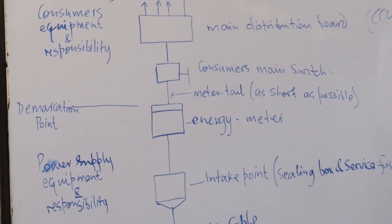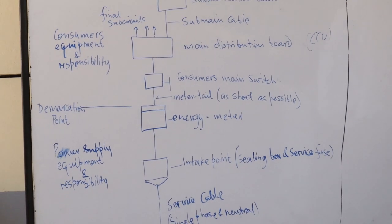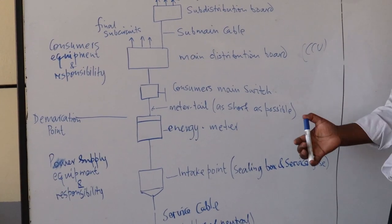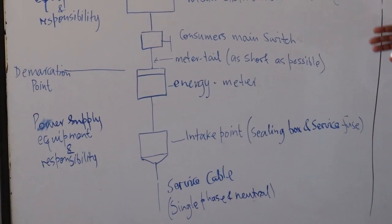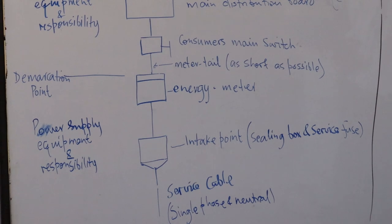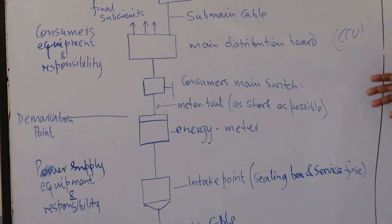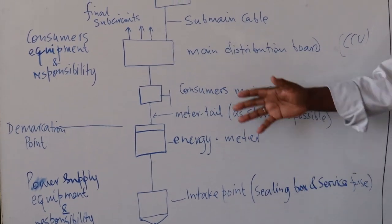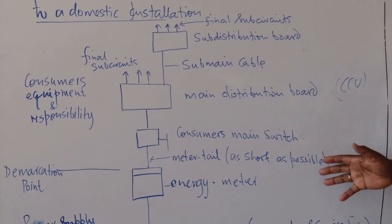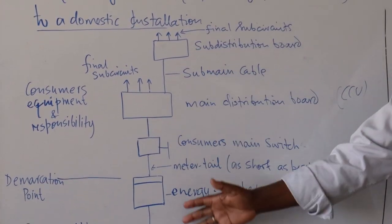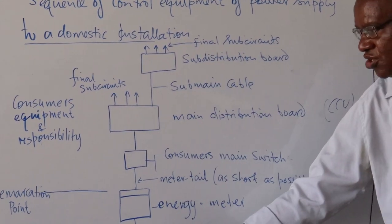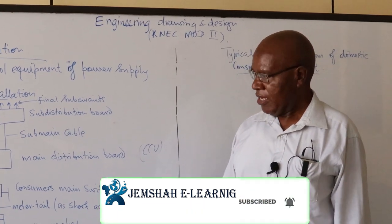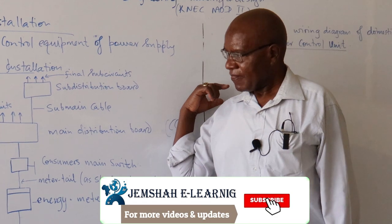So that used to be the standard arrangement until a few years back. Briefly, I'll talk about the other new arrangement which has come in, involving the token supply. Basically, that is how the equipment should look. That will be the sequence of control equipment. So we are going to have a look at a typical wiring diagram of all of this — if you are given it, you should be able to come up with a wiring diagram for how all this is connected, which is our next topic.